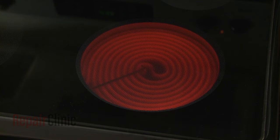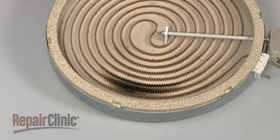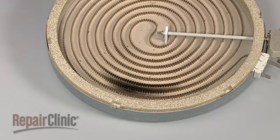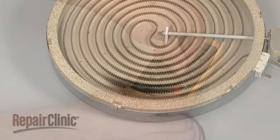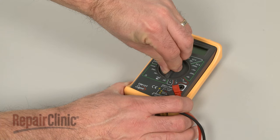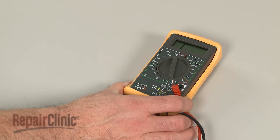If the element is shorted out, it may prevent the element switch from shutting off the voltage. You can sometimes determine that a surface element has shorted out by seeing if the component has any visible damage. In some cases, you can also use a multimeter to determine if an element has shorted out.